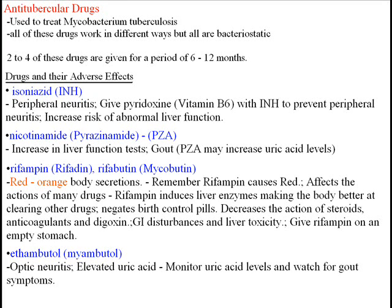The next drug is pyrazinamide, also known as PZA. Adverse effects include increase in liver function tests, so liver function tests should be done before and during PZA therapy. There is also a risk for gout, because PZA may increase uric acid levels, so you'll want to check those.